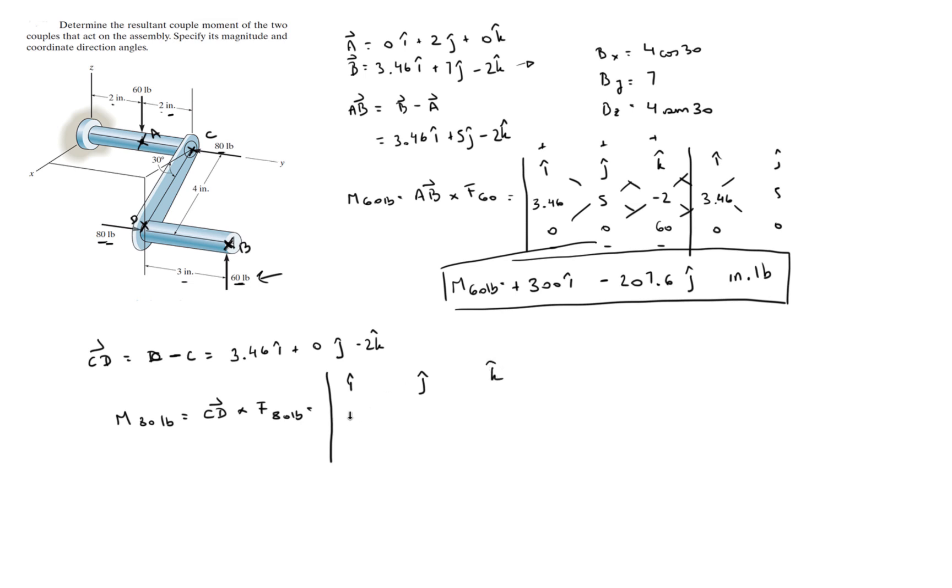CD is 3.46, 0, and negative 2. And this is 0, 80, and 0. Again, this is positive 80 because we're going from C to D, so we're using this one. If we were going from D to C, we would use a negative one, and all the signs would basically flip and it will give you the same result. I, J, so we're gonna complete the matrix: 3.46, 0, 0, 80.